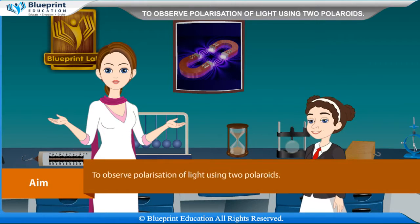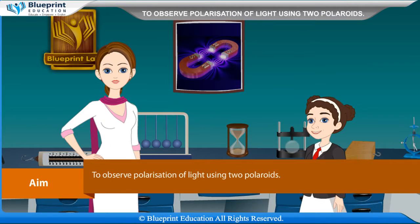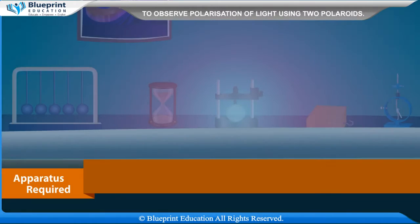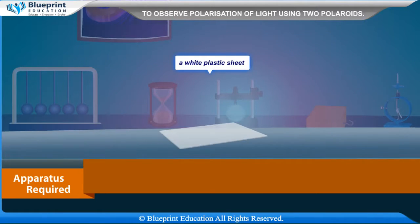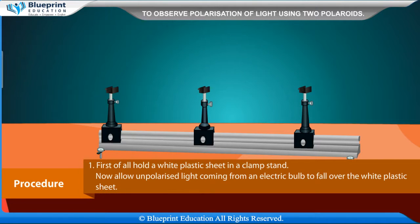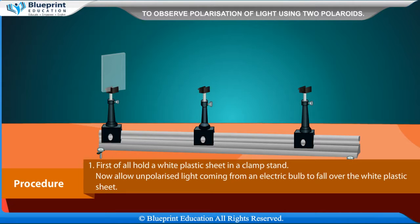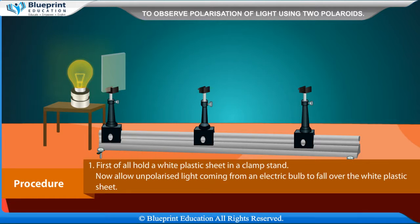Our aim here is to observe polarization of light using two Polaroids. Apparatus required are two Polaroids, an electric lamp, and a white plastic sheet. Procedure: First of all, hold a white plastic sheet in a clamp stand. Now allow unpolarized light coming from an electric bulb to fall over the white plastic sheet.